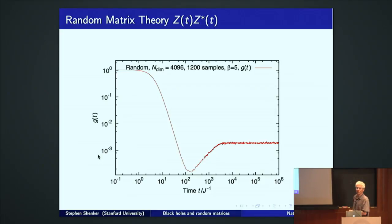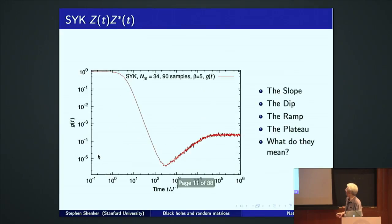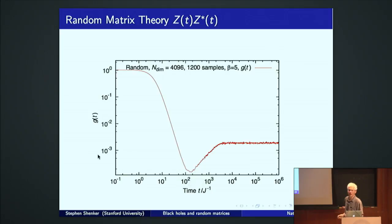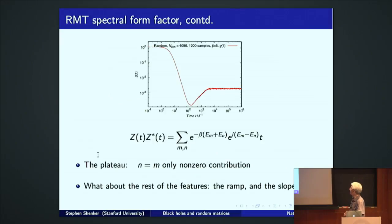Same ZZ star, same beta. And the essential point of today, if you take nothing else away from today, is that this picture looks a lot like that picture. That's SYK. That's random matrix theory. They kind of look the same. Okay. In particular, notice there's a slope and a ramp and a plateau.